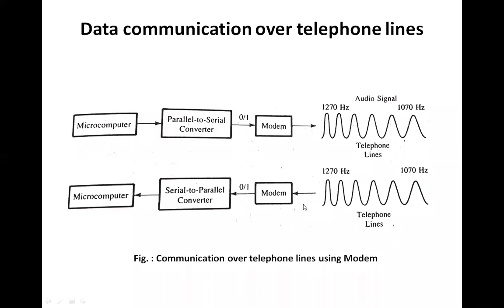A communication link must be established after control signals have been exchanged between the computer and the modems. The microcomputer is connected to the modem through a parallel-to-serial converter, and at the receiving end, the modem converts the serial signal back to parallel so it can be transferred to the microcomputer.